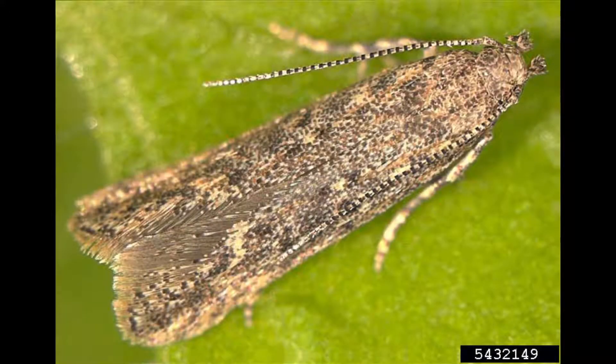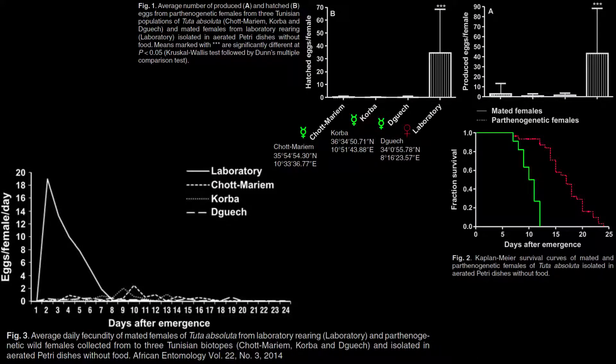The tomato leaf miner moth can fly about 1,000 kilometers in a day and can be propelled by high wind currents as far as 4,000 kilometers, greatly facilitating local dispersal.